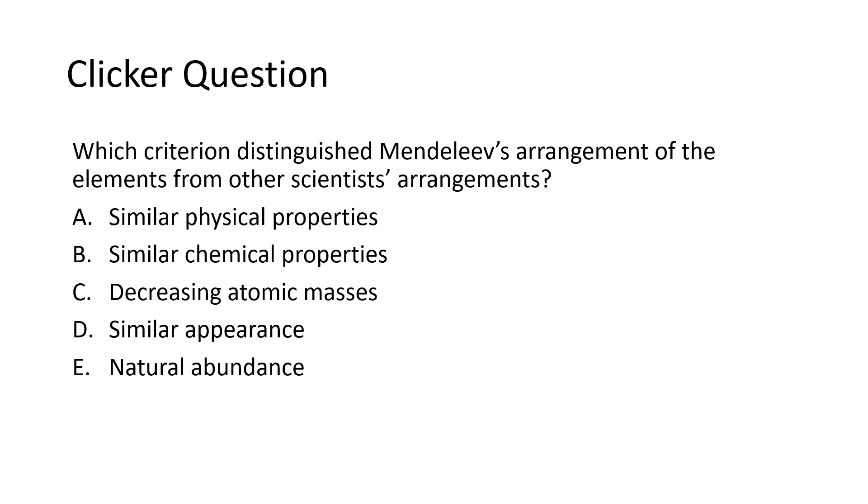So the thing that really, truly distinguished Mendeleev was arranging elements with similar chemical properties. So the best answer here is answer B. And if you go back and look at his early proposed table, it's all based on compounds that were formed by elements with oxygen and with hydrogen. So that's very definitely their chemical properties.